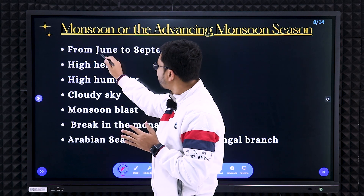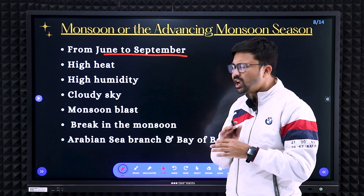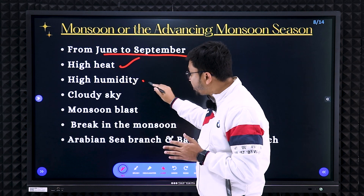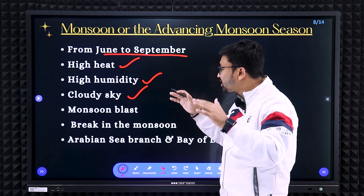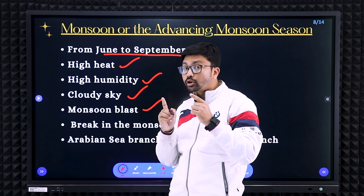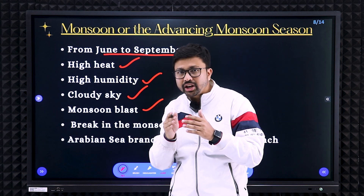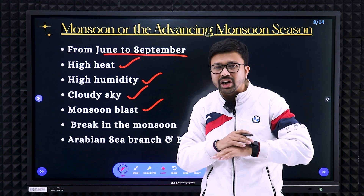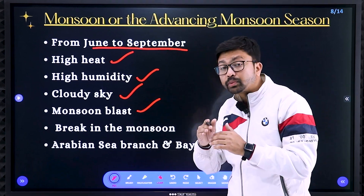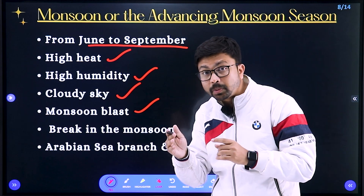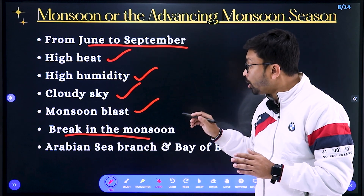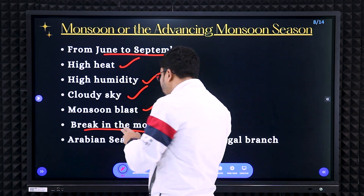Next is the monsoon or advancing monsoon season — the rainy season from June to September. Around 90 percent of rainfall occurs during these four months. Features include high temperature, high humidity, more rainfall, and a cloudy sky. Monsoon blast occurs at the beginning of June when the monsoon comes with a lot of moisture and suddenly starts creating heavy rain for continuous few days — that is called the monsoon blast. After that phase, rainfall occurs with frequent gaps — that is called break monsoon. These two terms are very important.